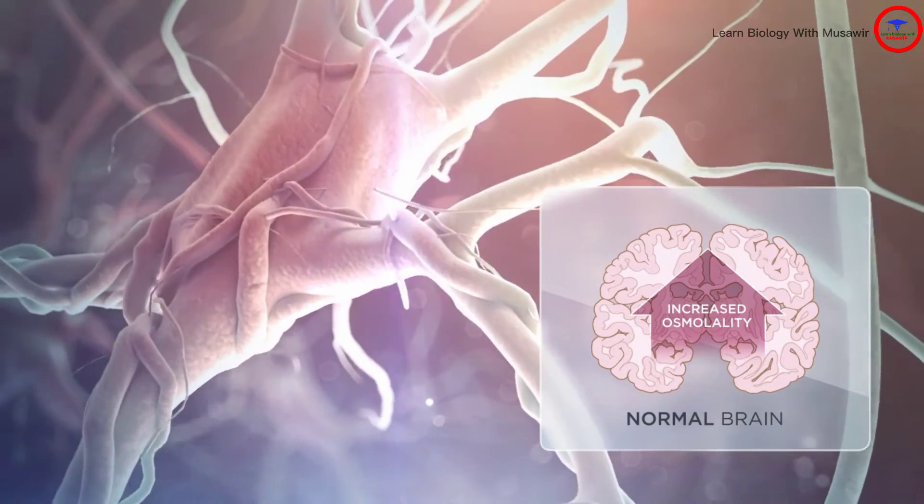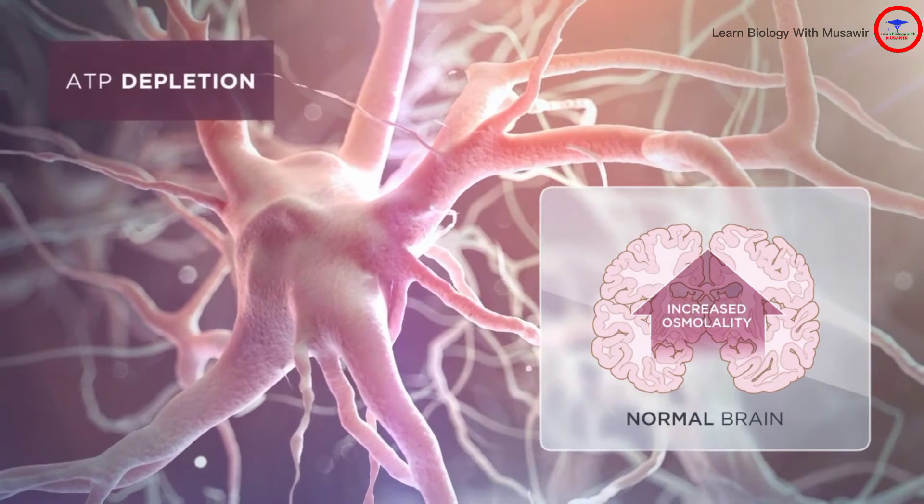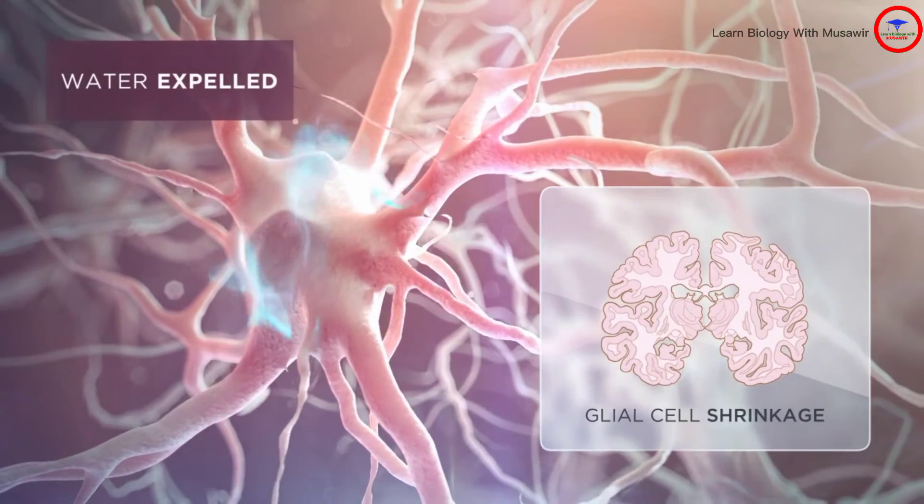This process, however, is a significant metabolic strain on glial cells, leading to ATP depletion. Water, therefore, leaves the glial cells, resulting in cell shrinkage.